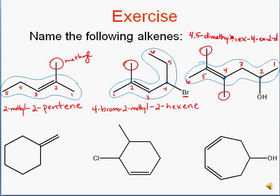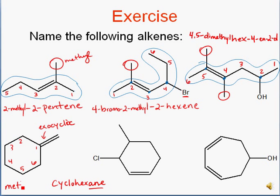Next we have an exocyclic alkene. We name the ring — it's 6 carbons, so this is a cyclohexane. Notice that because it's exocyclic, meaning it's outside of the ring, we say 'ane' at the end of the cycloalkane name. We say 'methylene', which tells you where the double bond is and that it's a one-carbon extension of the cyclic structure. So this is methylene-cyclohexane.